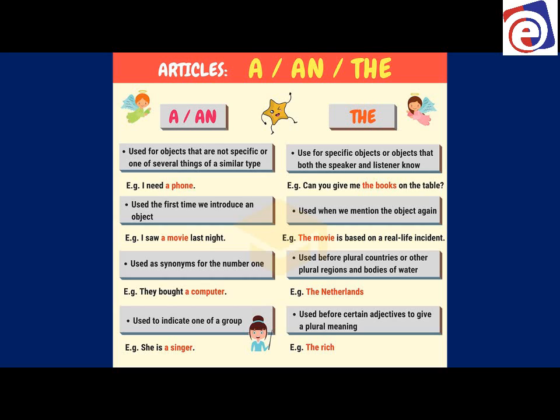'The' is used before plural countries, regions, and bodies of water: the Netherlands, the United Kingdom, the United States, the Philippines. For example, the United States is 50 states united together — not one state — so we say 'the United States.' We also use 'the' before certain adjectives to give a plural meaning: 'the rich' meaning 'the rich people,' 'the wealthy people.' That's the short lesson on how to use the article. Sometimes we need to study the same lesson many times for it to move from short-term to long-term memory.